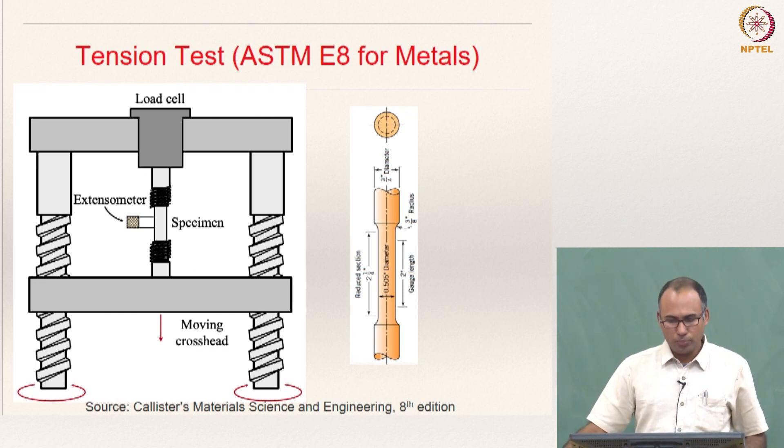You will have grippers, and depending on the experiment you want to do you may have to change the gripper. If it is a cylindrical specimen, the grippers must be of a different kind compared to when you have a flat specimen. It is called a universal testing machine because you can do other tests as well — not only tension but also compression, shear, and three-point bending — all using the same machine with different fixtures.